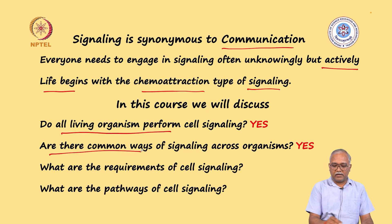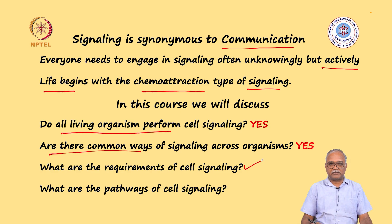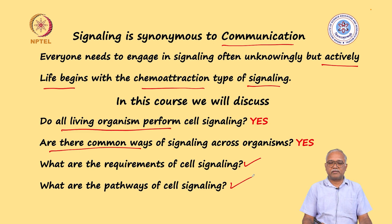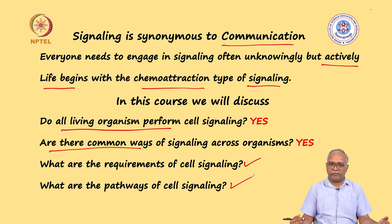What are the requirements of cell signaling? We will see that. And what are the pathways of cell signaling? We will see that also. In general, when we say cell signaling, it means that two distinct cells are coming into contact or from different regions they are signaling to each other.